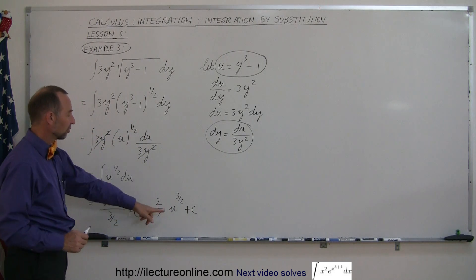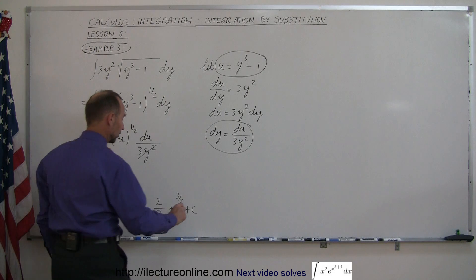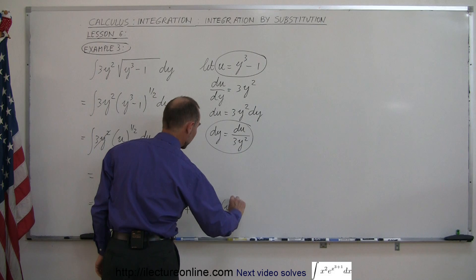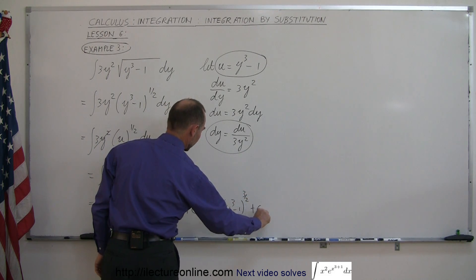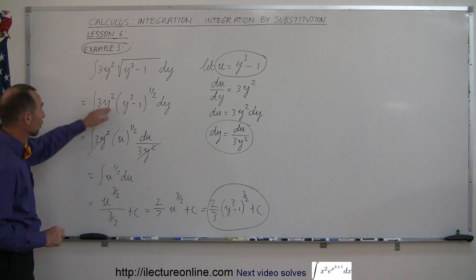And then all we have to do at this point is simply substitute back in what u is equal to in terms of y. And so this can be written as 2 thirds the quantity y cubed minus 1 to the 3 halves power plus a constant of integration. And that is the integral of what we started with over here.